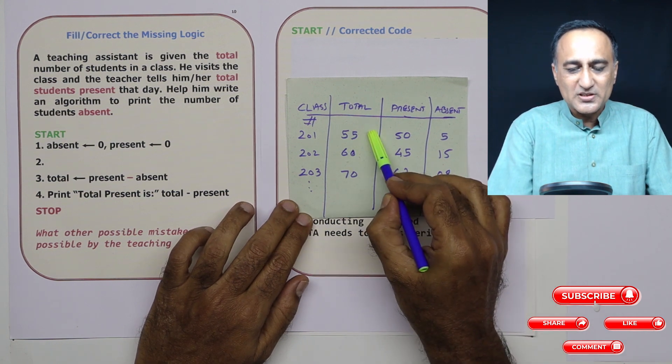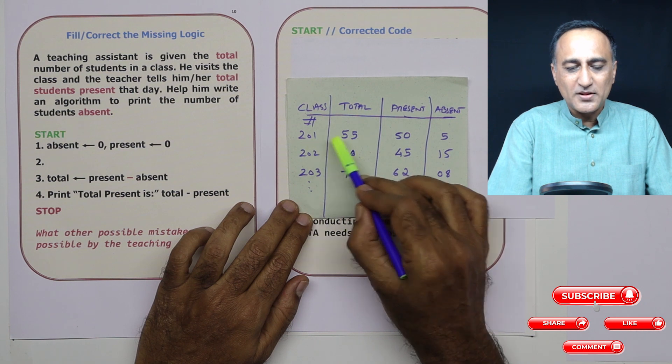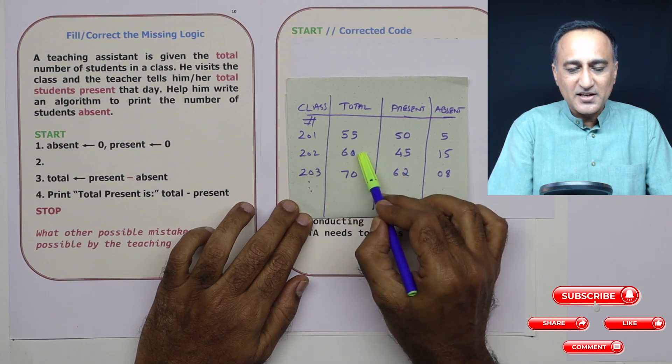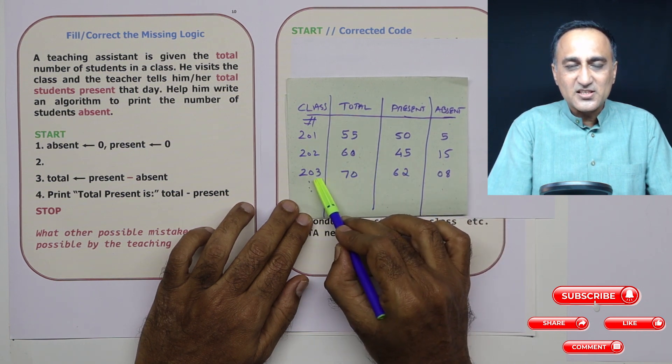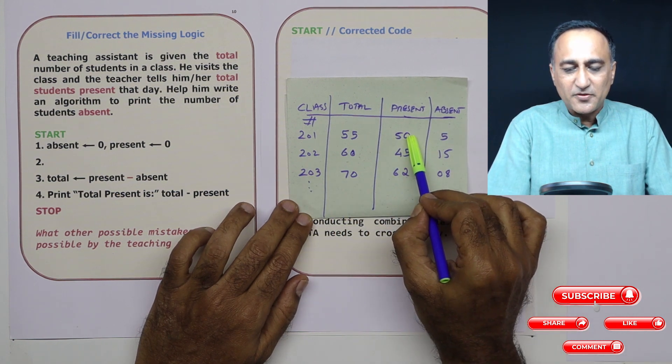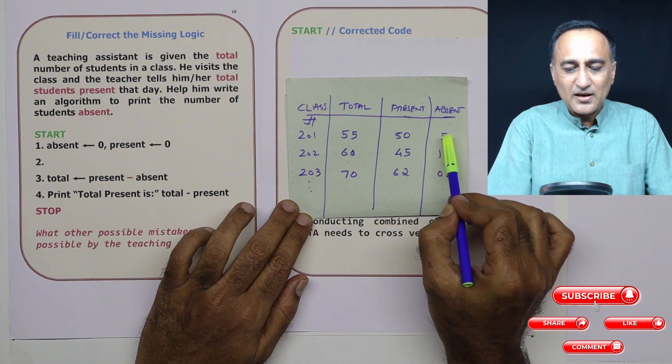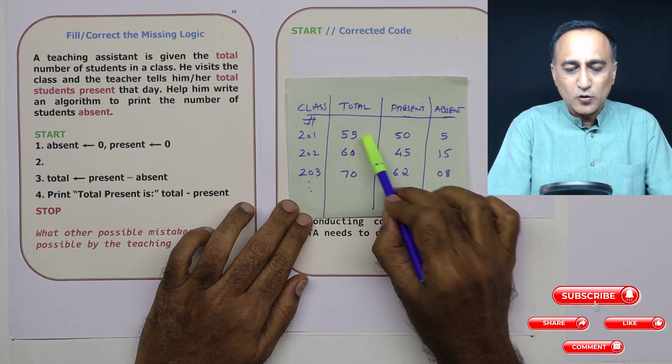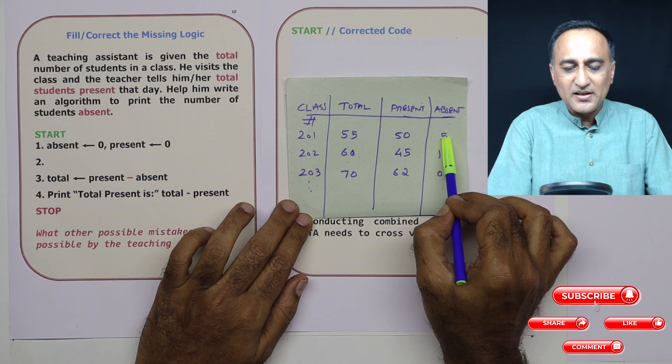Suppose this is computer science, there are 201, there should be 55. In English, let's say there are 60. And this let's say there is for economics, there are 70. So he goes to the class, the teacher tells him 50 are present, then using the formula absent equals total minus present is able to calculate the absent.